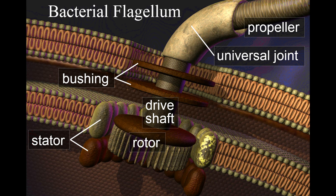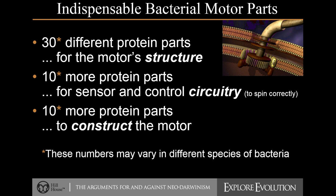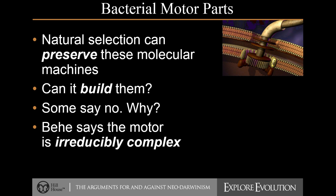When you look at the parts, you see that there are not only a lot of parts, but they really resemble the kind of motors that we construct as humans. Just looking at it, it certainly has the appearance of something intentionally designed. Structurally, at least 30 different parts are involved in building it, 10 more parts in making it move, and 10 more parts involved in the assembly process. The numbers vary slightly from one type of bacteria to another, but the big picture is that there are a lot of different things all required to make this motor work.